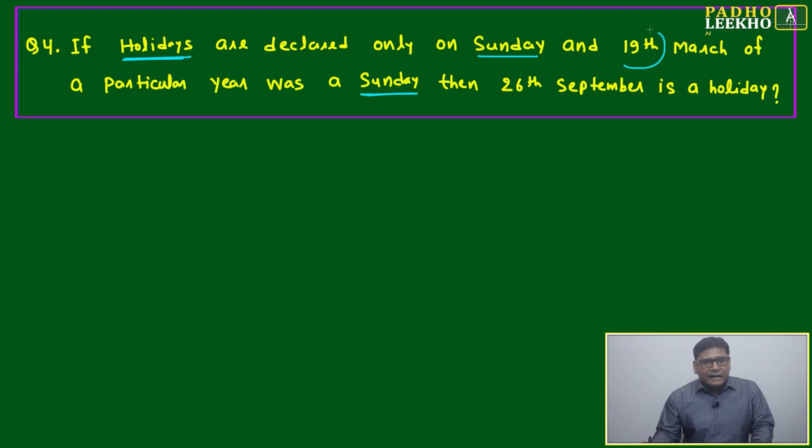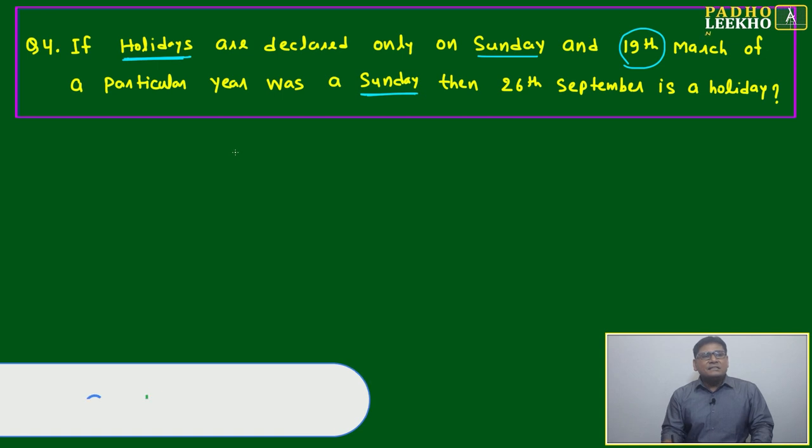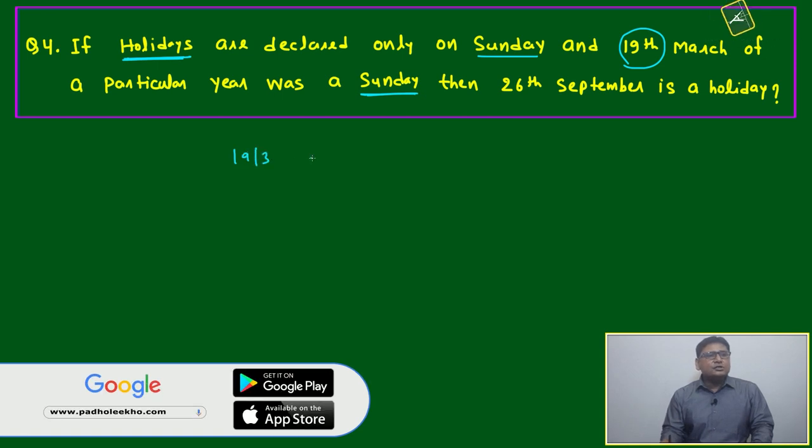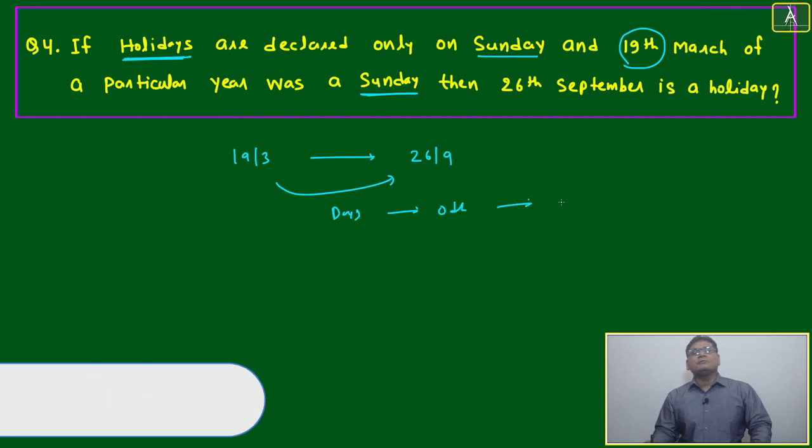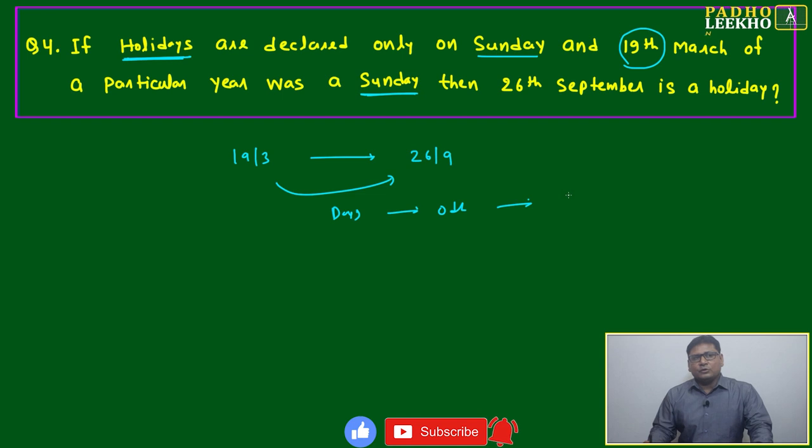One reference is given: 19th March of a particular year was a Sunday. Then we have to calculate how many days from 19th March to 26th September, and based on that we will be able to calculate if it will be Sunday or not.